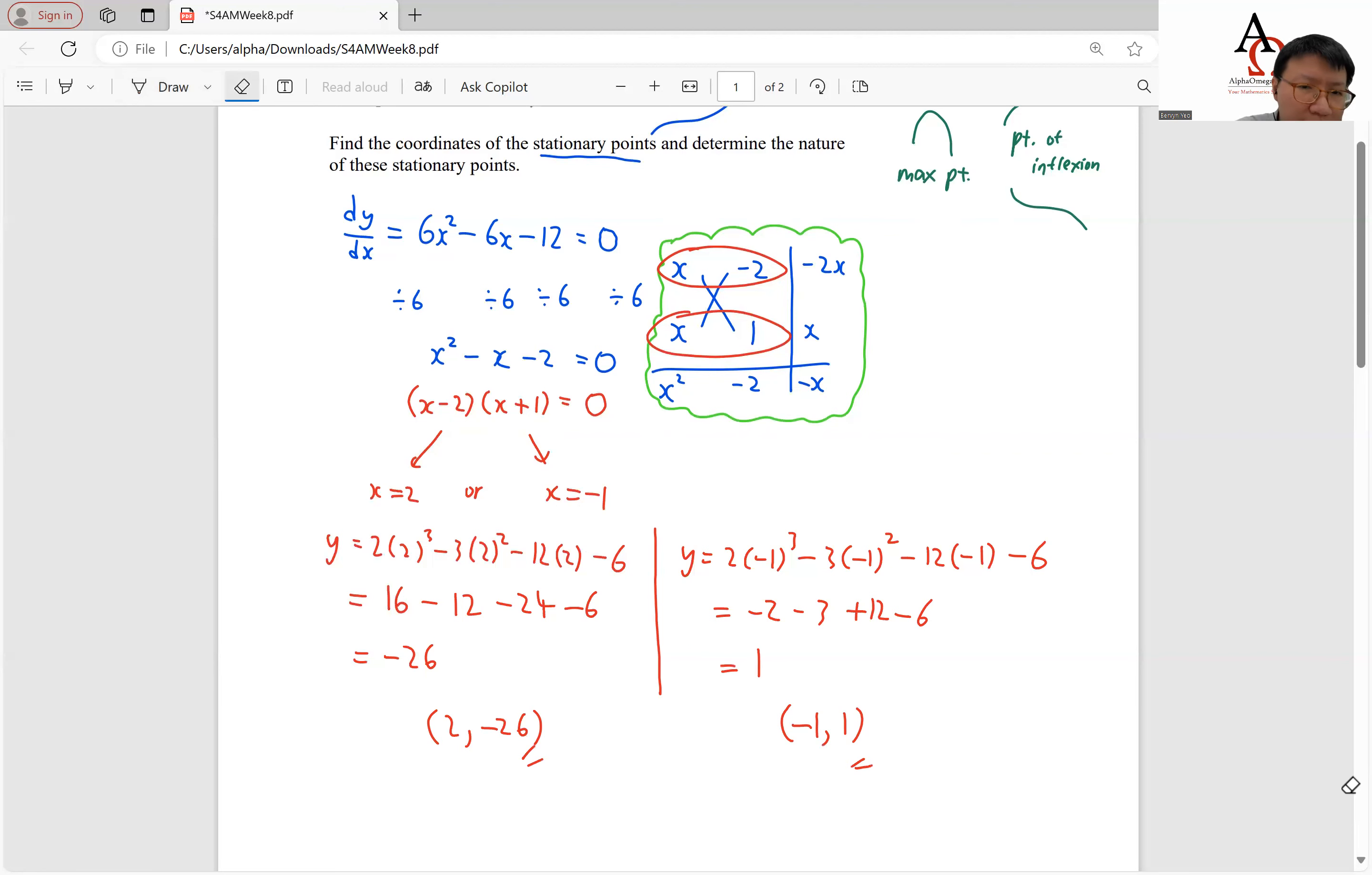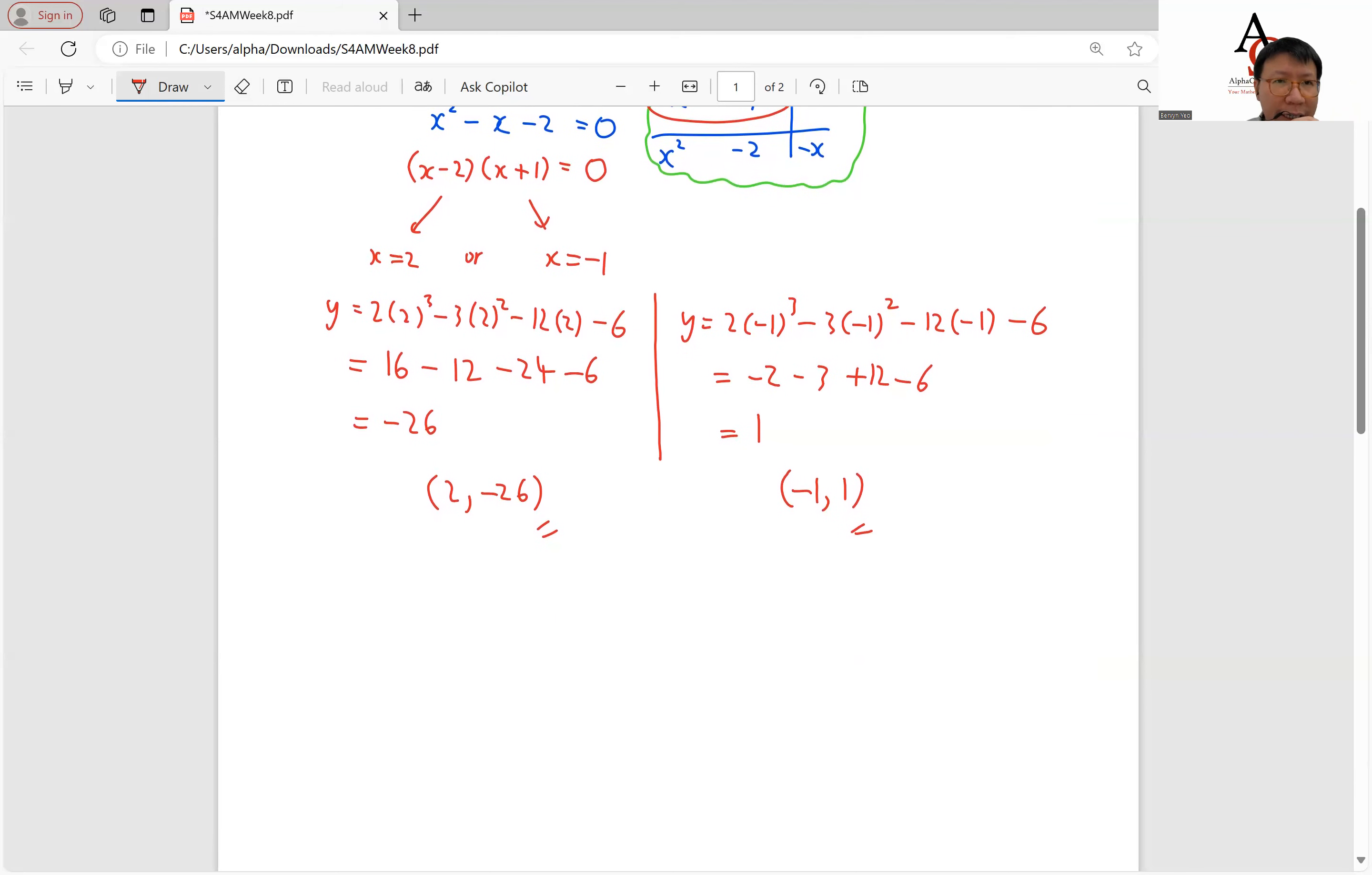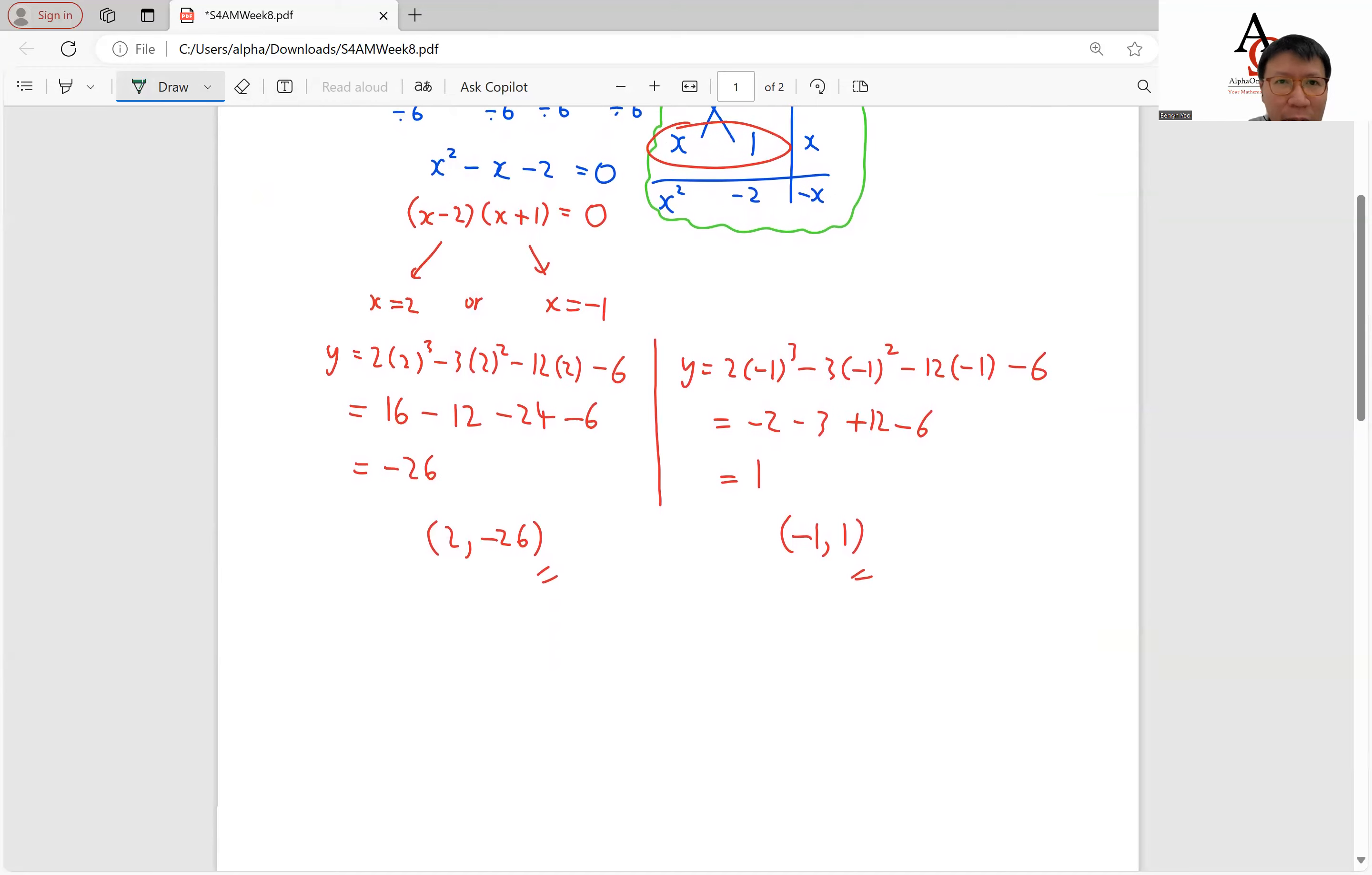So we have solved the first part of the question. But we also have to find the nature of these points. And using this second derivative, we can actually find. So let's differentiate our function a second time to obtain this.